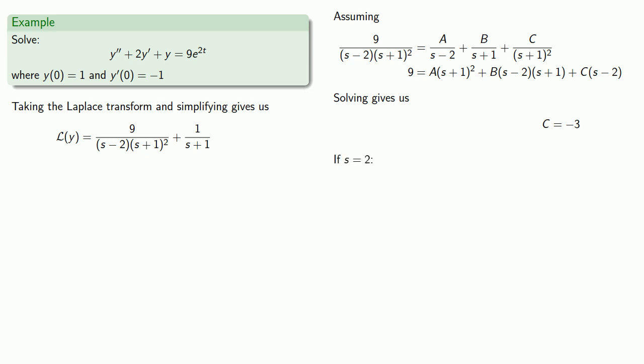If s is 2, our equation becomes, and we can solve this for A. And to find B, we can pick any other value of s. So if s is equal to 0, we can substitute this and our known values for A and C to get the equation and solve for B.